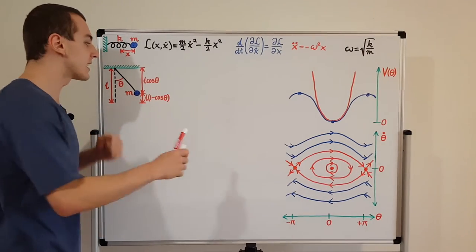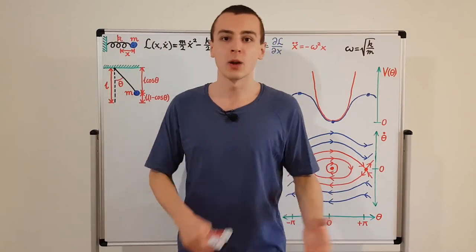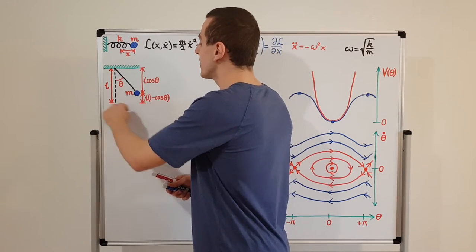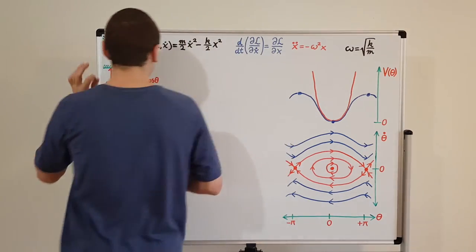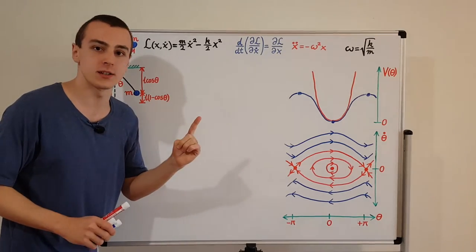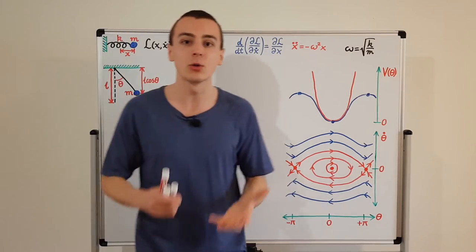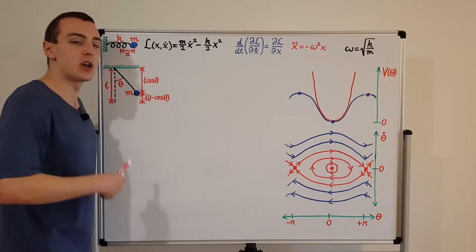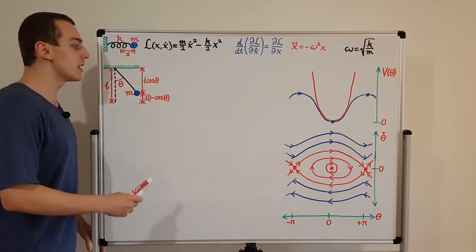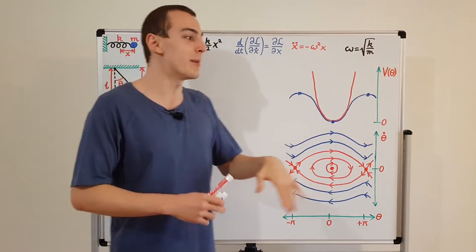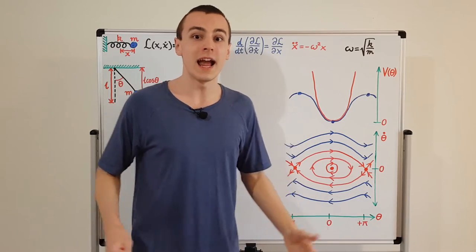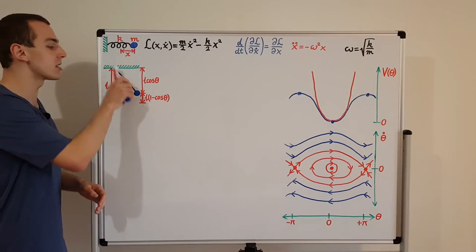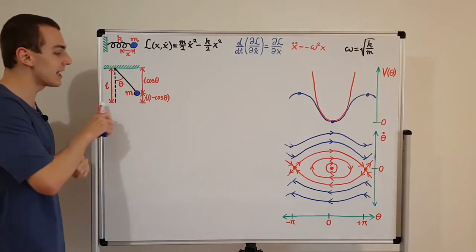We have a constraint linking together the coordinates. We could write this in terms of x and y, but because the bob must move along a circular trajectory, we can drop one coordinate and parameterize the circle with the angle theta. That is what Lagrangian mechanics does when you have constraints: it reduces the degrees of freedom. The explicit constraint equation is x squared plus y squared equals l squared, where l is the length of the string.